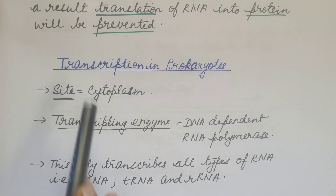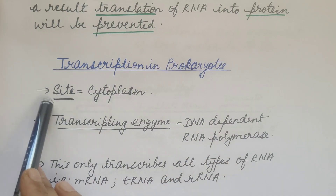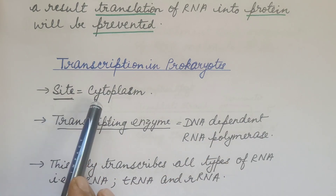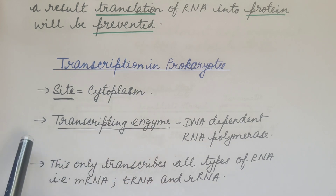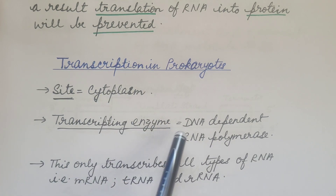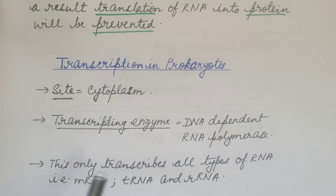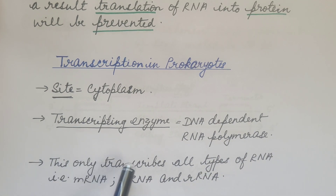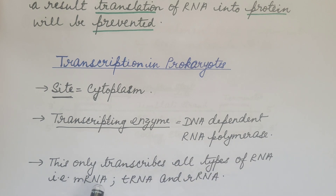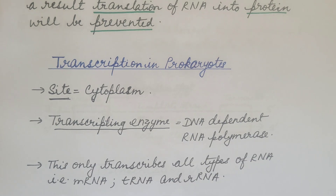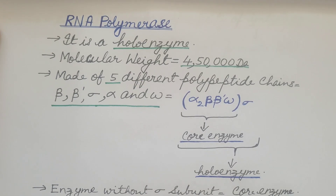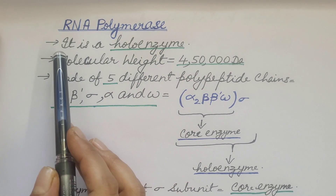Now let us see transcription in prokaryotes. The site of transcription in prokaryotes is the cytoplasm, and the transcribing enzyme involved is DNA-dependent RNA polymerase, also called RNA polymerase. This RNA polymerase transcribes all types of RNA — that is, messenger RNA, transfer RNA, and ribosomal RNA.